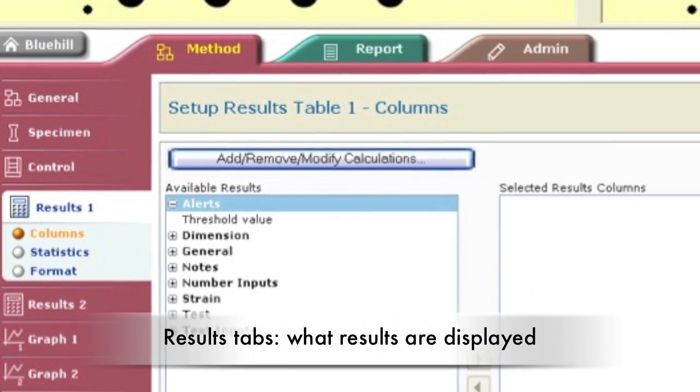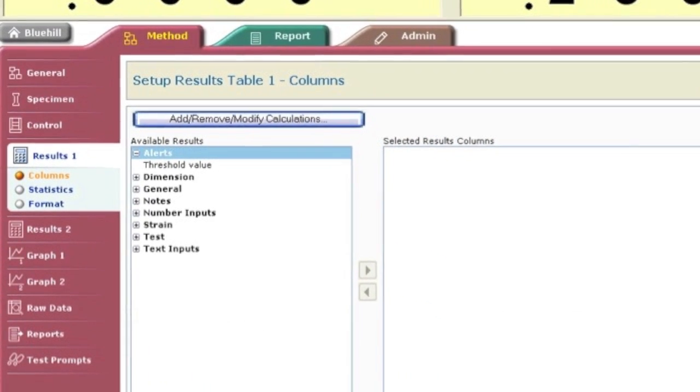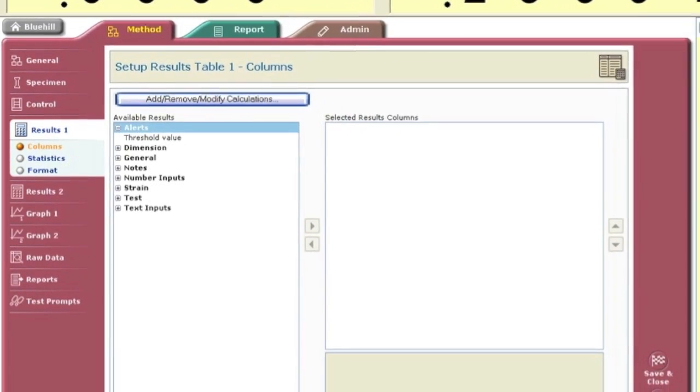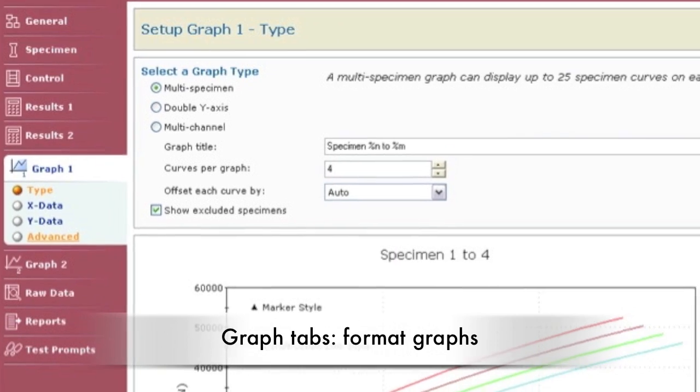The results section specifies what results and calculations are shown. Two tabs are provided to allow for separate result displays. The two graph sections display the results and format the graphs.